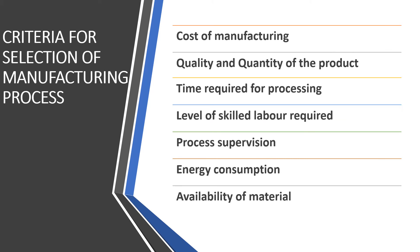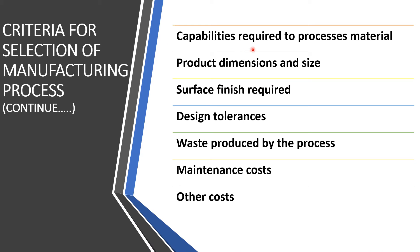Various criteria are shown broadly: cost of manufacturing, quality and quantity of product, time required for processing, level of skill and labor required to produce a product, process supervision, energy consumption, availability of material, capabilities required to process material, product dimension and size, surface finish required, design tolerances, and maintenance cost. We will look at each criterion in brief and understand how it affects the selection of any manufacturing process.